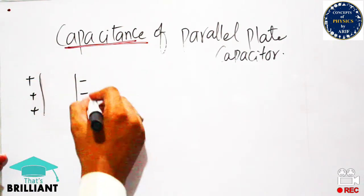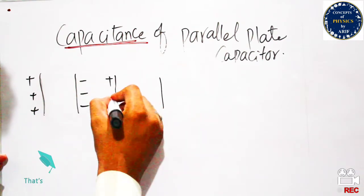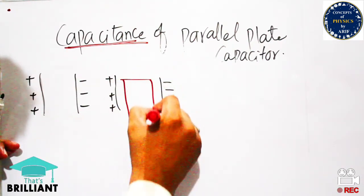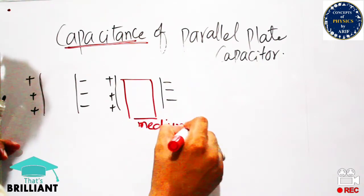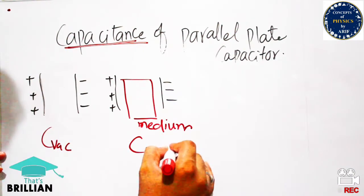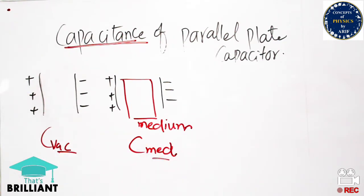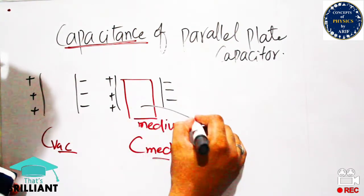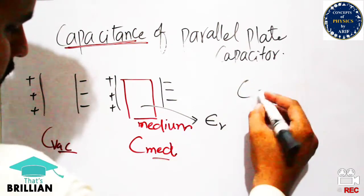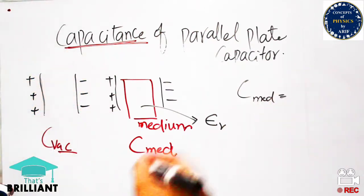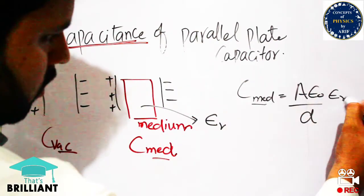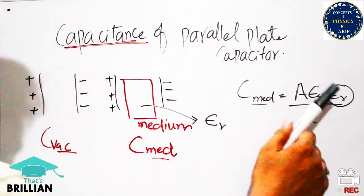We will now discuss two cases: when the two plates are separated by vacuum, and when separated by some medium. When any medium — such as a dielectric, paper, or wood — is placed between the parallel plates, it affects the capacitance. The capacitance with a medium is given by C = Aε₀εᵣ/d, where εᵣ is the relative permittivity.